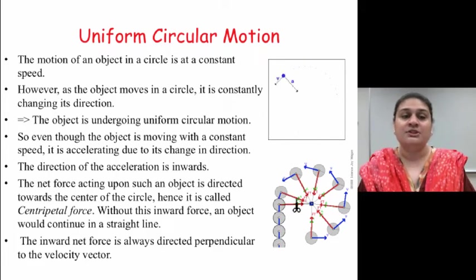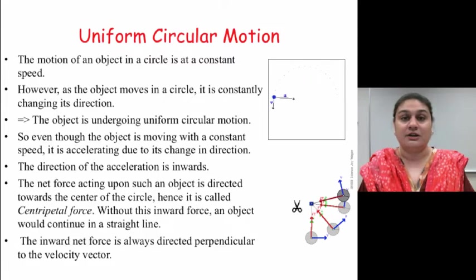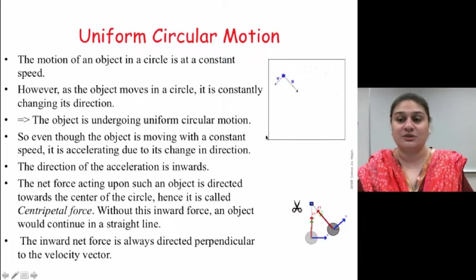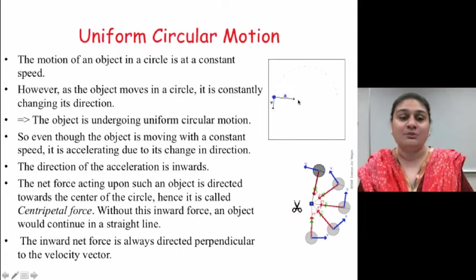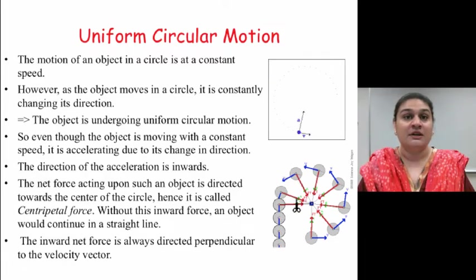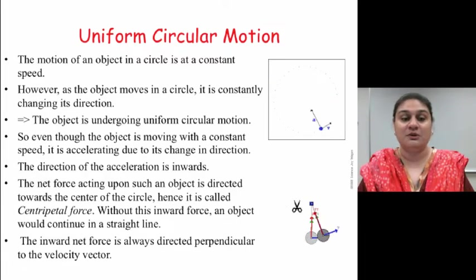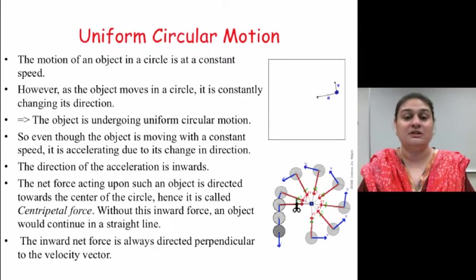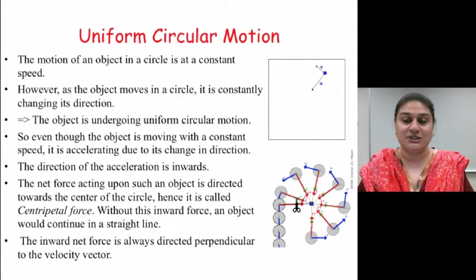The motion of an object in a circle is at a constant speed. However, as the object moves, it constantly changes its acceleration as shown in the figure here. So the object is undergoing a uniform circular motion. Even though the object is moving with a constant speed, it is accelerating because of the constant change in its direction.